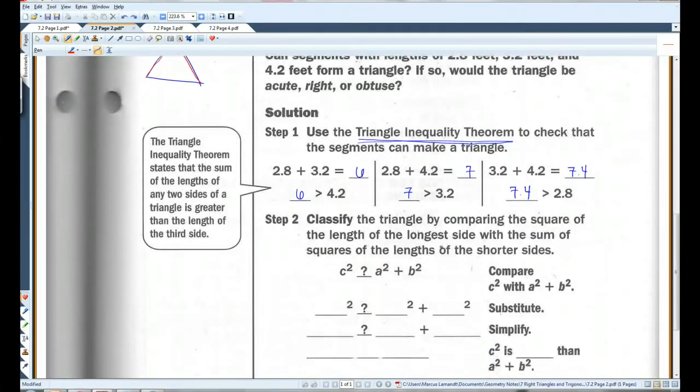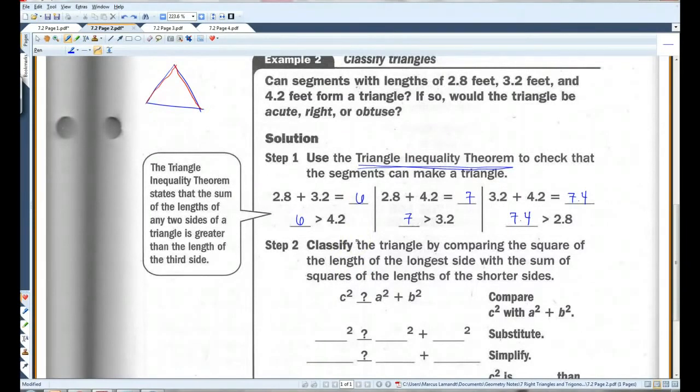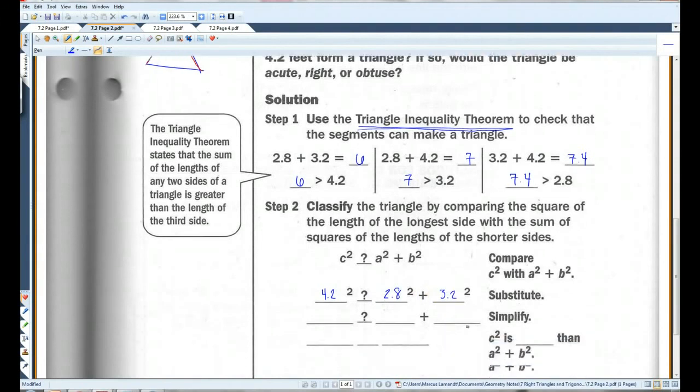So let's classify the triangle. Let's go back to blue. Alright. C squared, or C, is going to be the longest side, so we're going to use 4.2. So I got 4.2 squared. We don't know if it's equal, bigger, or less than. A squared is, or A is 2.8. B is 3.2. I'm going to use a calculator for this one.